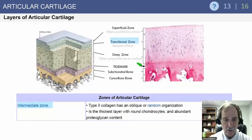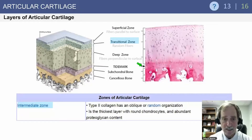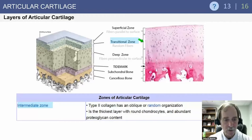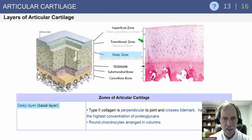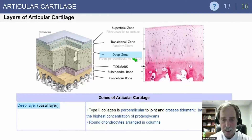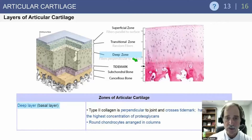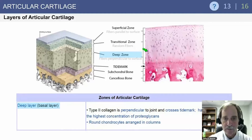The intermediate zone of articular cartilage has type 2 collagen with an oblique or random organization. The deep zone is the thickest layer, with round chondrocytes and abundant proteoglycan content. In the deep zone, type 2 collagen is perpendicular to the joint and crosses the tide mark. It has the highest concentration of proteoglycans, as well as round chondrocytes arranged in columns.